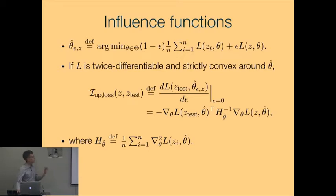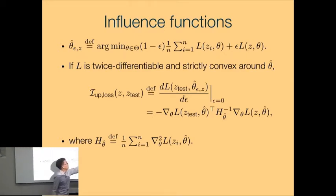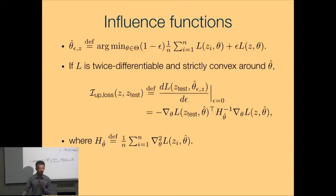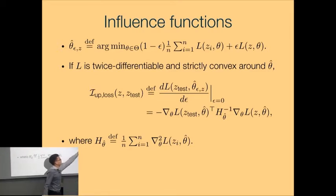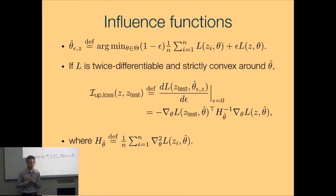The derivation is not too difficult — it's basically taking a quadratic Taylor expansion of the loss. As a sanity check: if the gradient here is very large, it means that if I change the parameters by a little bit, I can reduce the loss on my training example by quite a lot — that's the definition of a large gradient. That means if I upweight that training point, my parameters would want to change quite a lot because I want to reduce the loss on that training point. So the influence of that training point will be higher.